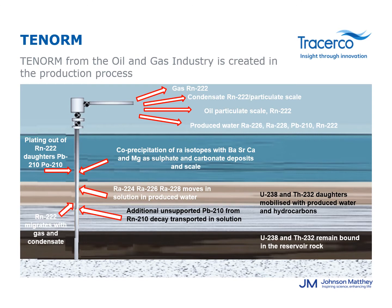These daughters may be transported in the aqueous and gaseous phases when oil and gas is recovered from the reservoir, which results in NORM deposits in enhanced concentrations due to these chemical and physical processes which take place in process equipment.